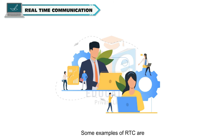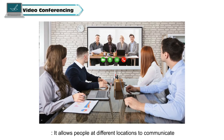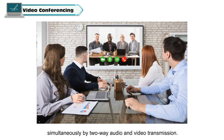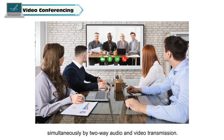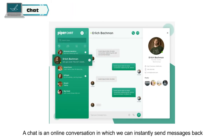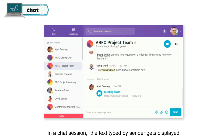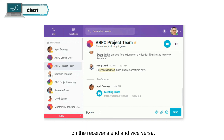Some examples of RTC are: Video Conferencing, which allows people at different locations to communicate simultaneously by two-way audio and video transmission. This technology uses face-to-face conversations mainly for virtual meetings and distance learning. Chat is an online conversation in which we can instantly send messages back and forth to one another using the Internet. In a chat session, the text typed by the sender gets displayed on the receiver's end and vice versa.